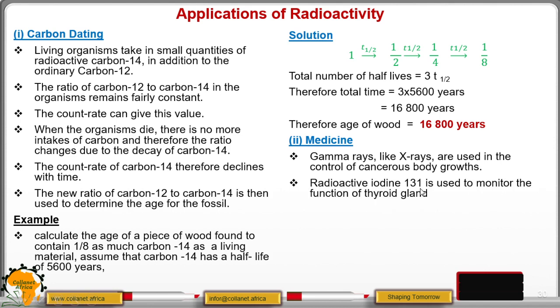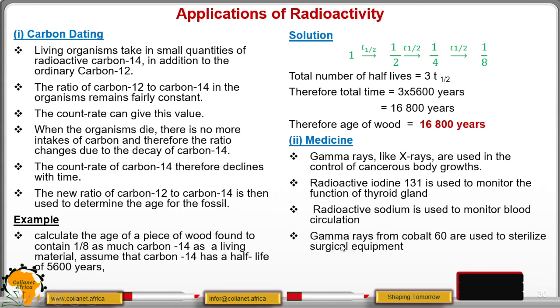Radioactive iodine-131 is used to monitor the function of thyroid gland. Radioactive sodium is used to monitor the blood circulation. This radioactive sodium is taken by your body or it is injected in your body, and then using radioactive detectors, we are able to detect or to monitor how the blood is circulating in the body. Gamma rays from cobalt-60 is used to sterilize surgical equipment that is able to kill germs and therefore the surgical equipment are clean.